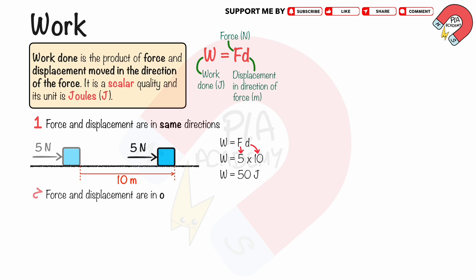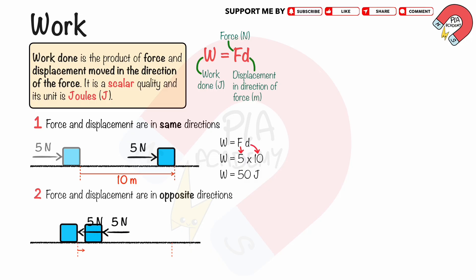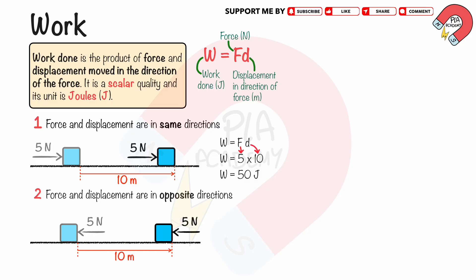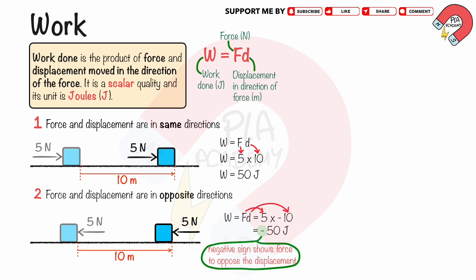When the force and the displacement are in the opposite directions, the work done is negative. If a 5 Newtons force acts on a box to the left while the box moves 10 meters to the right, as shown, the work done can be calculated using W equals FD. Substituting F equals 5 Newtons and D equals negative 10 meters, we get the work done equals negative 50 joules. The negative sign indicates that the force opposes the displacement.